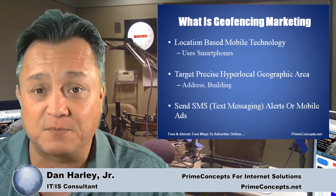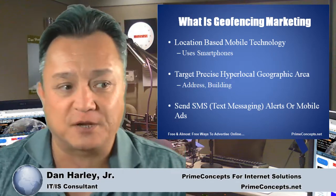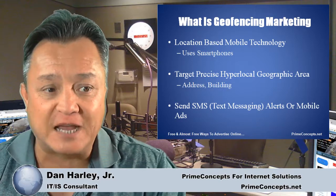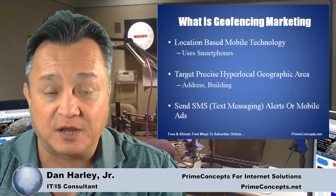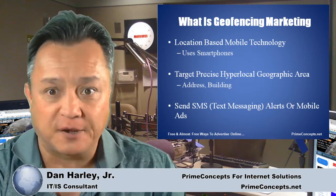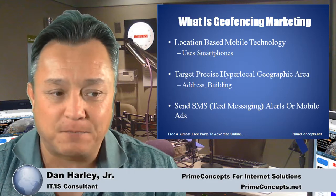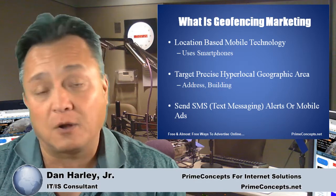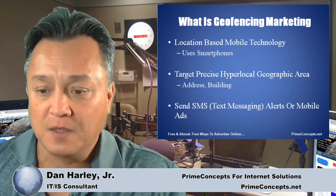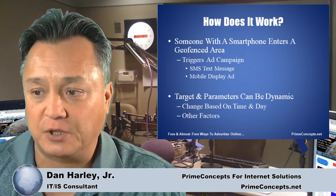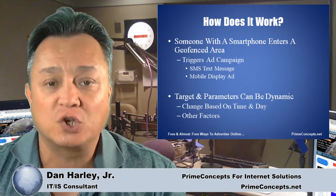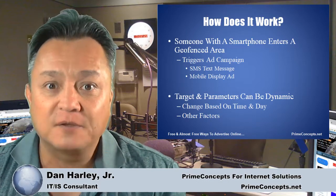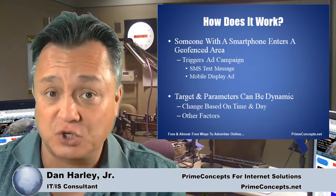So what is geo-marketing, geo-fencing marketing? Basically, it uses location-based mobile technology — people's smartphones. We're able to target precise, hyper-local geographic areas; in other words, the address of a building. So we can literally target my friend's competitors. Based on that technology, we're able to send either text messages or, more traditionally, mobile ads. When someone with a smartphone enters a geo-fenced area — which could be an address or a building — this triggers the ad campaign to fire off the ad, which could be a text message or a mobile display ad.